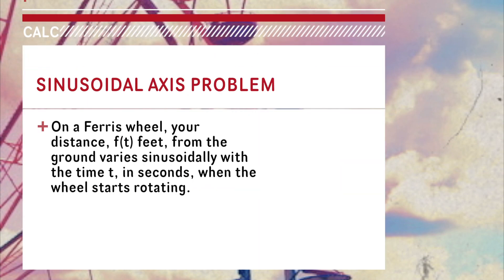To get started, here is the problem. On a Ferris wheel, your distance f(t) feet from the ground varies sinusoidally with time t in seconds when the wheel starts rotating.